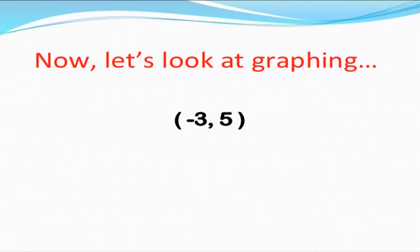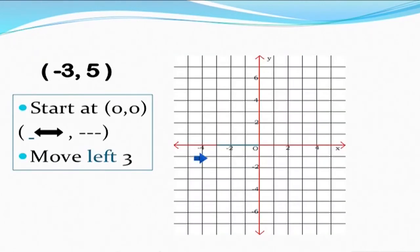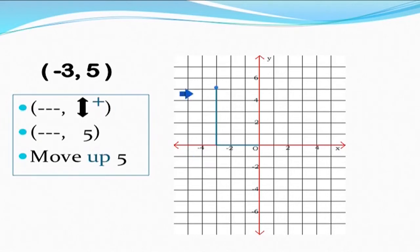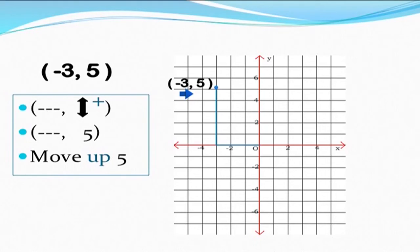Now let us look at graphing (-3, 5). We start at (0, 0). As 3 is negative, we move left from the origin on the x-axis by three points. Then as 5 is positive, we move up five points from the origin on the y-axis, and the intersecting lines create the point (-3, 5).